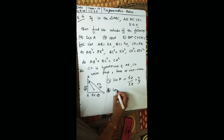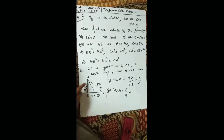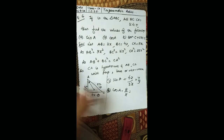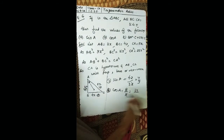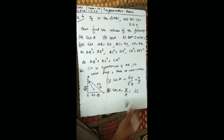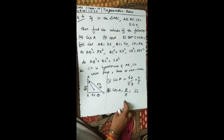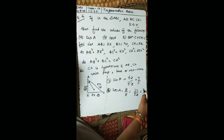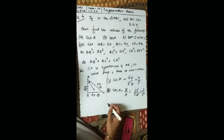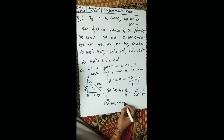For cos A, base upon hypotenuse: the base is 3x and hypotenuse is 5x, so cos A equals 3 upon 5.